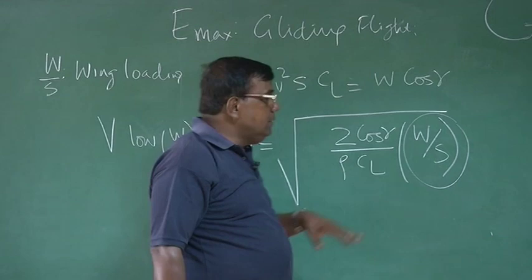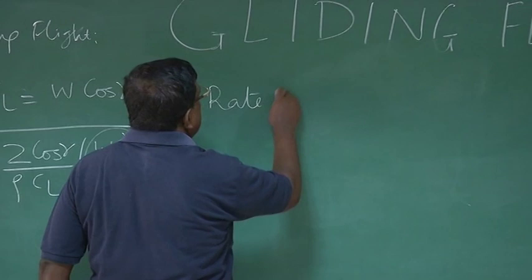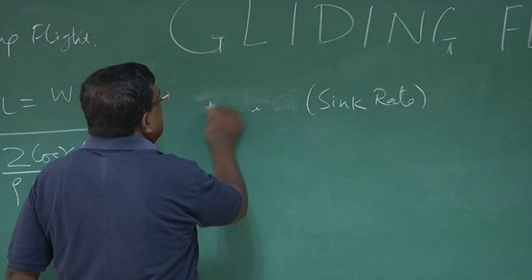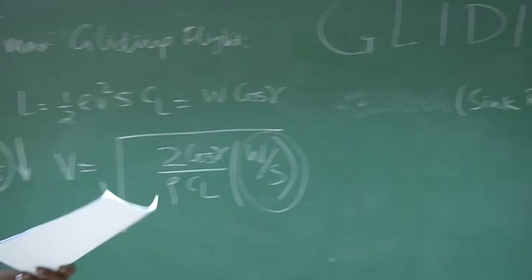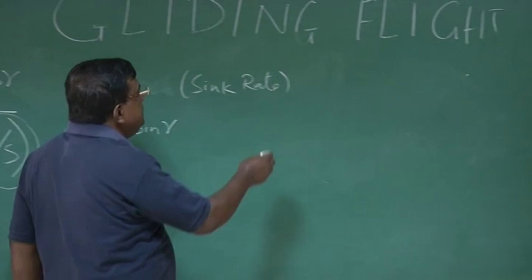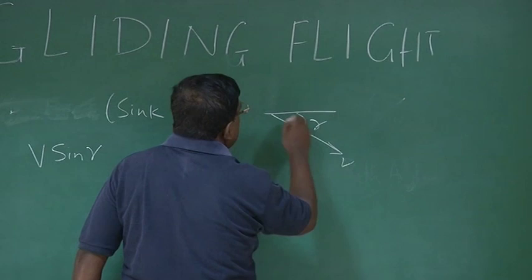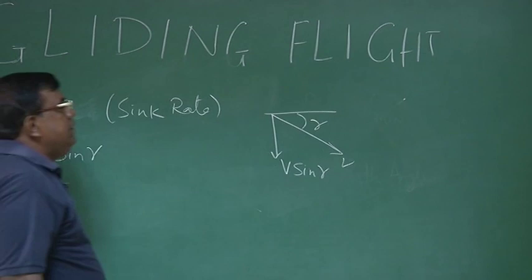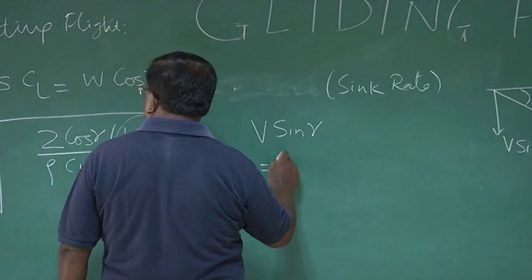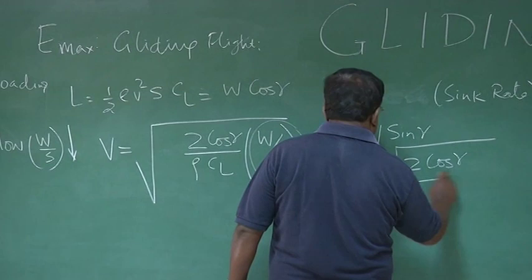We are talking about rate of descent, rate of descent or this is called sink rate, better word is sink rate. In the textbook, you will see that rate of descent or sink rate, climb rate or sink rate. What is that rate of descent? It is nothing but V sin gamma. From the diagram, you could see that, this is V this is gamma. So this velocity component is V sin gamma and that is the rate of descent or sink rate. So if V is this and V sin gamma is rate of descent. So I can write rate of descent equal to V is square root of 2 cos gamma by rho CL, W by S, this is V. And what is sin gamma?